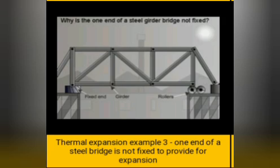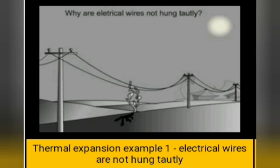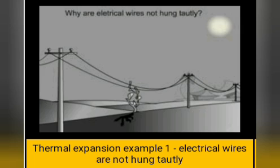Second example: the iron girders used to make a bridge are fixed only at one end; the other end rests on rollers. The end resting on the roller is free to expand in summer and contract in winter without causing damage to the bridge. Third example: telephone and electric wires between poles are fixed to allow for contraction in winter and expansion in summer — that is why wires between poles tend to sag on a hot day. Bimetallic strips are used as thermostats in electrical heating devices such as electric irons, geysers, and toasters to control temperature.